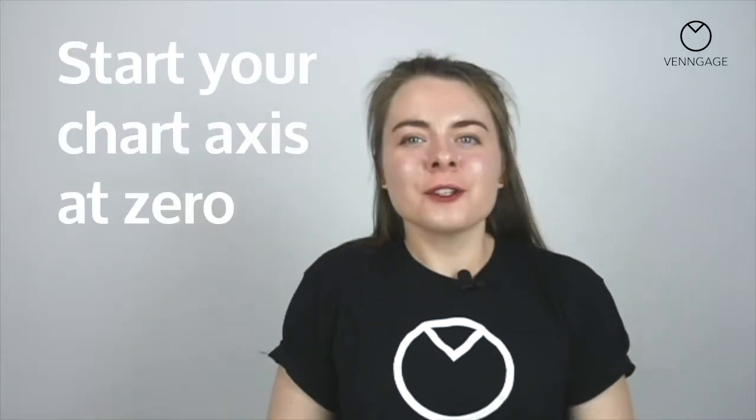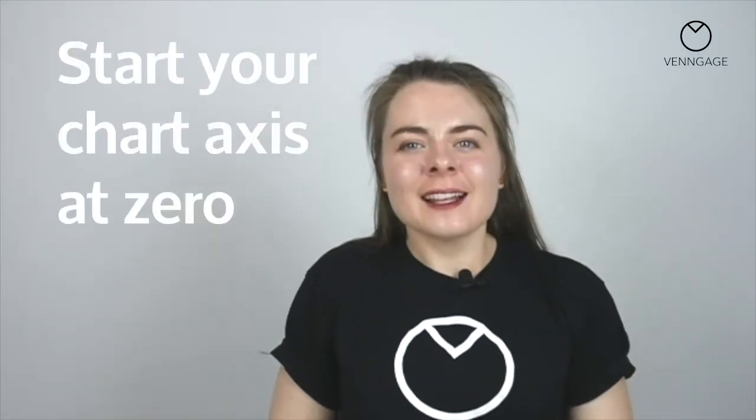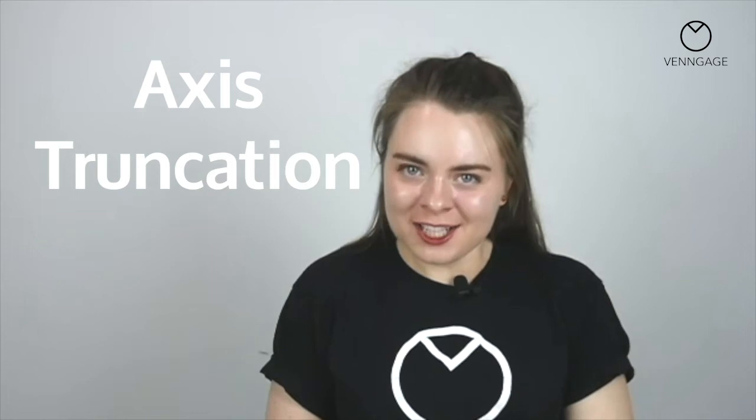Now that we have gone through the different I-CORE goals, I'm going to give you some quick-fire chart best practices that everybody should be using. These best practices will help make sure that your data won't be skewed and that your charts will be easy to understand. The first tip is to start your chart axes at zero. Starting your chart axes at a number other than zero can cause your data to be distorted — this is called axis truncation.